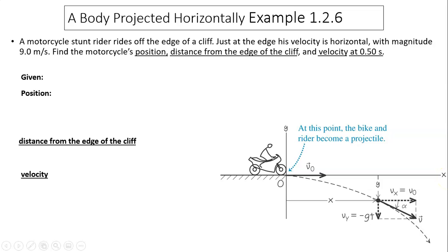Another example, a motorcycle stunt rider rides off the edge of a cliff. Just at the edge, his velocity is horizontal. So the path is horizontal projectile, with magnitude of 9 meters per second. Find motorcycle's position, distance from the edge of the cliff, and the velocity at 0.5 seconds.